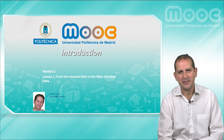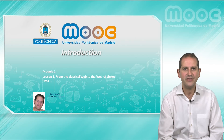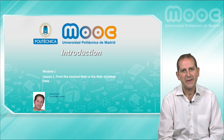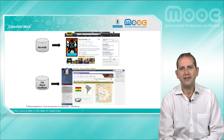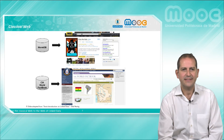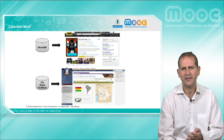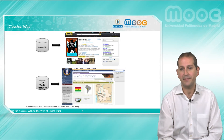Welcome to the first lesson from the first module of the course, where I am going to start with a brief introduction of how many of us think that data should be published on the web. Let us start by focusing on how a large amount of data is being published on the web nowadays. Basically, we have a good set of websites that are exposing data that comes from databases, usually relational databases, in the form of HTML pages.